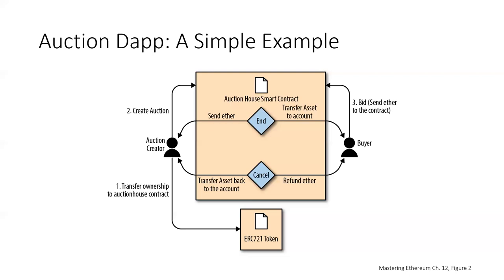Looking at the diagram, the token is assigned to the auction house contract so it can be auctioned off. We've got the auction creator who is creating the auction, and then a buyer who will bid on it. If the buyer wins, they receive the asset in exchange for their ether. If the auction gets canceled, the buyer gets their ether back, and if the buyer loses the auction, they also get their ether back.